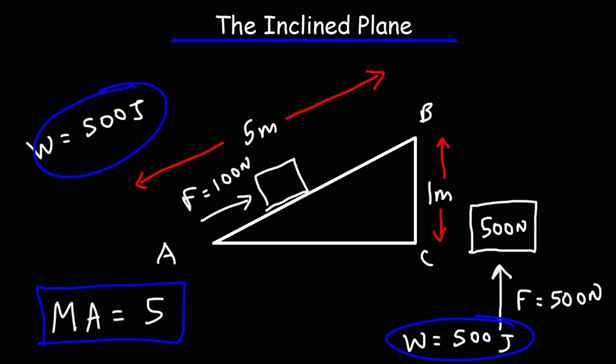If the mechanical advantage is less than one, then you're applying more force than the machine is putting out. But if the mechanical advantage is greater than one, like five, then the machine is making the work five times easier. It's multiplying the force by a factor of five.